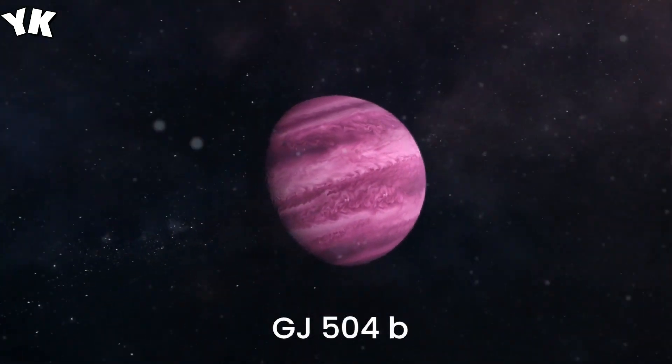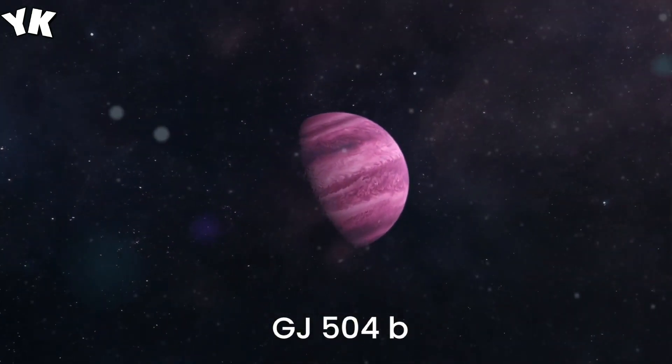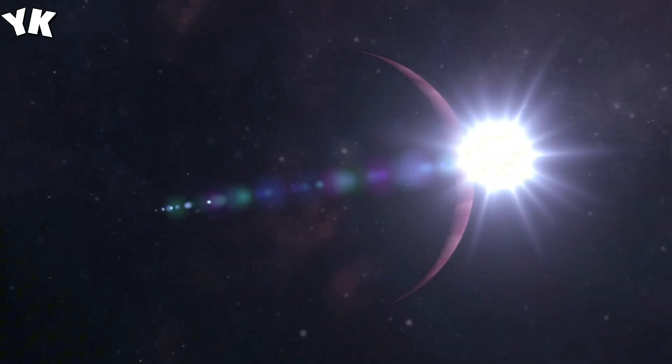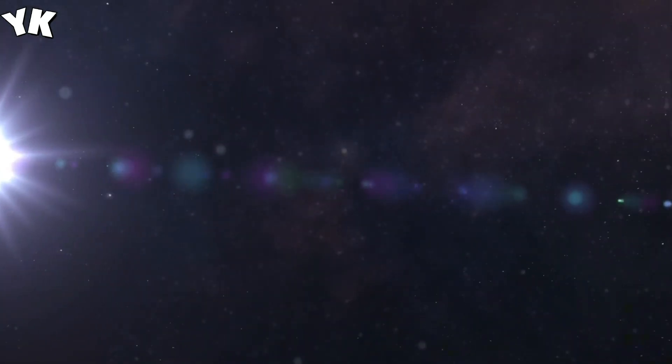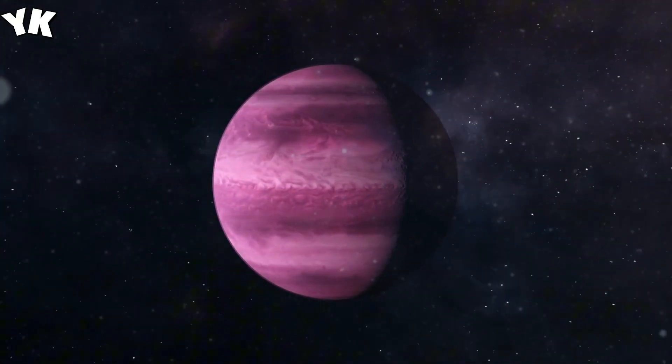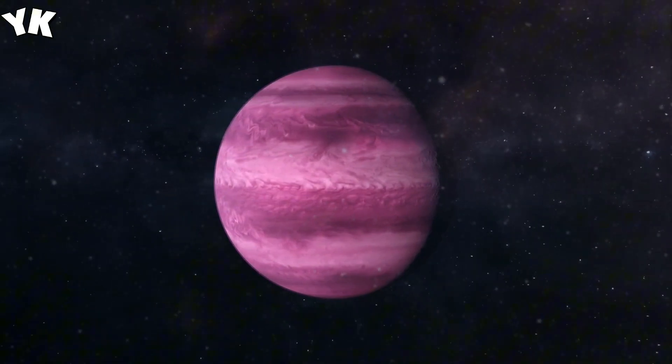G-J-504B, the Pink Planet. Now, let's meet G-J-504B, the pink planet located 57 light-years away. It's 4 times the mass of Jupiter, but dons an unusual magenta hue due to its youthful age. It's still cooling down from its formation, giving it a unique appearance.